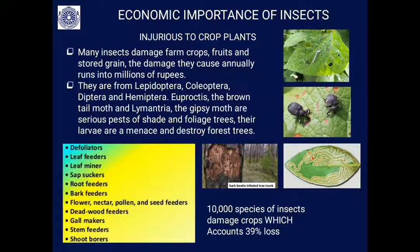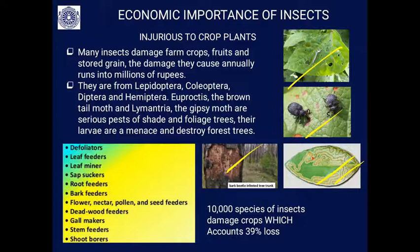Insects injurious to crop plants include defoliators, leaf feeders, leaf miners, root feeders, bark feeders, flower/nectar/pollen feeders, dead wood feeders, and gall-makers. They damage farm crops, fruits, and stored grains; the annual loss runs to crores of rupees. There are about 10,000 species of insects that damage crops, accounting for 39 percent of agricultural loss per year, caused mainly by Lepidoptera, Coleoptera, Diptera, and Hemiptera.